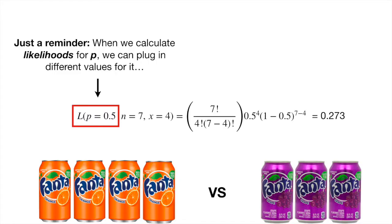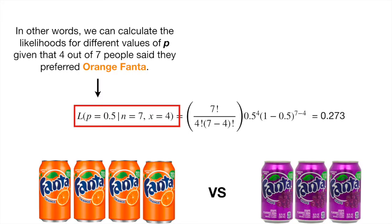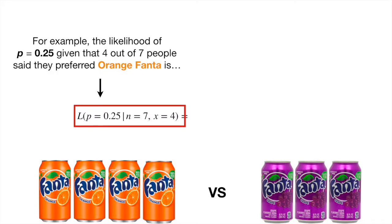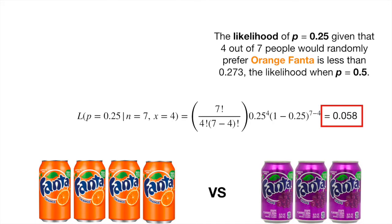Just a reminder: when we calculate likelihoods for p, we can plug in different values for it, while the observed data — n equals 7 and x equals 4 — remains fixed. For example, the likelihood of p equals 0.25, given that 4 out of 7 people said they preferred Orange Fanta, is 0.058. The likelihood of p equals 0.25 is less than 0.273, the likelihood when p equals 0.5.